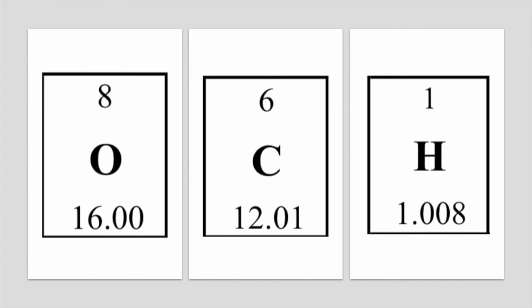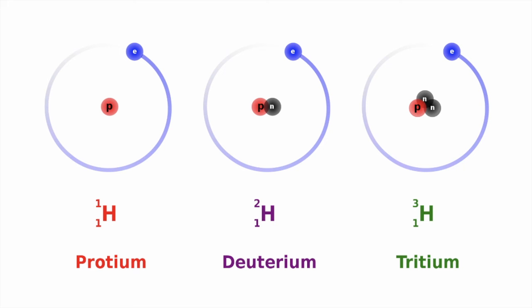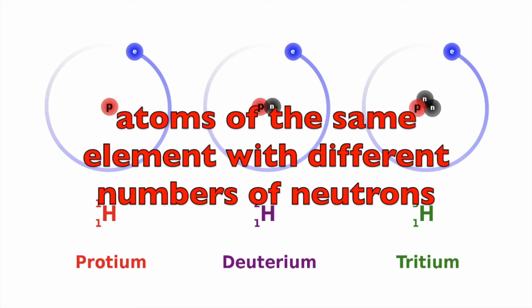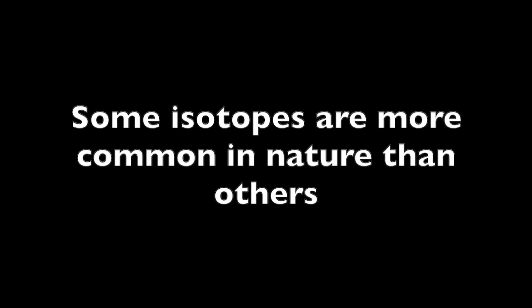You have probably noticed that the boxes in a periodic table have numbers on the bottom that have decimals rather than nice, even numbers. That's because these numbers represent average atomic masses. In nature, you don't usually just have one type of atom — you have several isotopes. Isotopes are atoms of the same element with different numbers of neutrons.